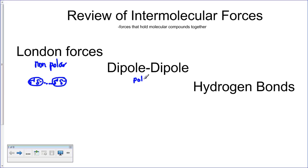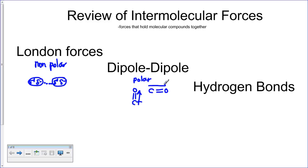Dipole-dipole forces are a type of intermolecular force that exists in polar molecules. When you have a polar molecule, you have a permanent dipole. For example, a C=O bond that has a dipole on it — that dipole on one molecule can be attracted to the dipole on a neighboring molecule, because there's an attraction between the slightly negative end of one molecule and the slightly positive end of the other.